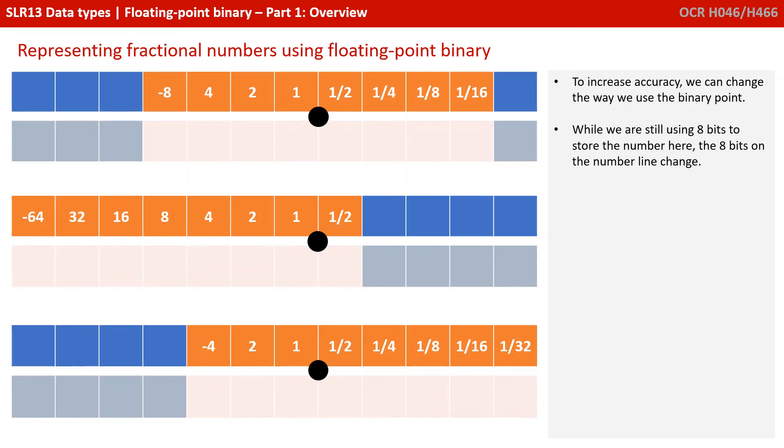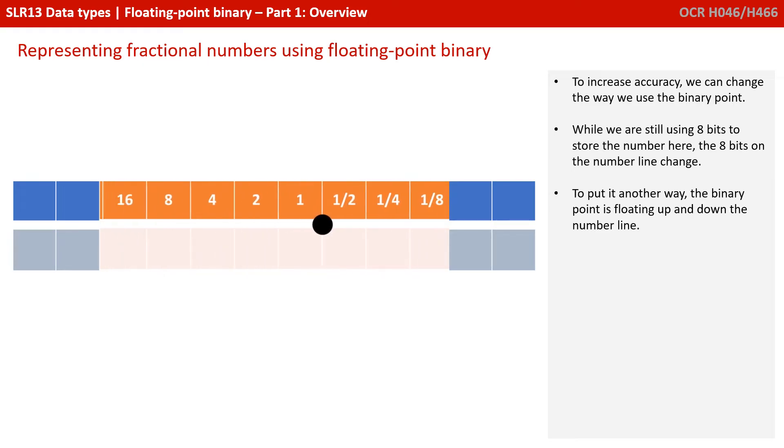To increase accuracy, we can change the way we use the binary point. While we're still using 8 bits to store the number here, the 8 bits on the number line change. To put it another way, the binary point is floating up and down the number line.